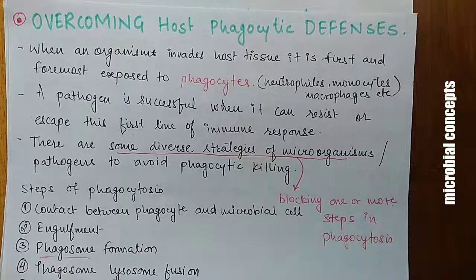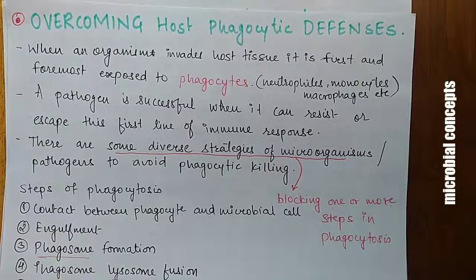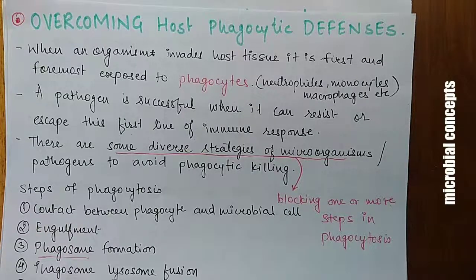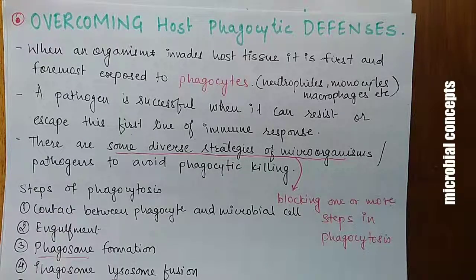When an organism invades host tissue, it is first exposed to phagocytes — cells such as neutrophils, monocytes, and macrophages. A pathogen is successful when it can resist or escape this first line of immune response. Pathogens have developed diverse strategies to avoid phagocytic killing by blocking one or more steps in phagocytosis.